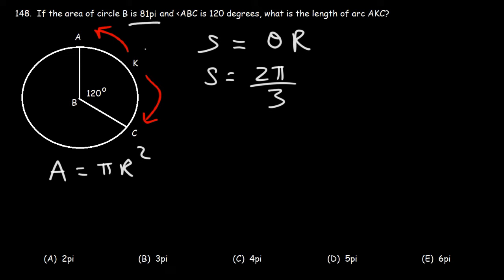In this example, the area of circle B is 81 pi. Dividing both sides by pi, we get that 81 is equal to r squared. Taking the square root of both sides, we can see that r is equal to 9.